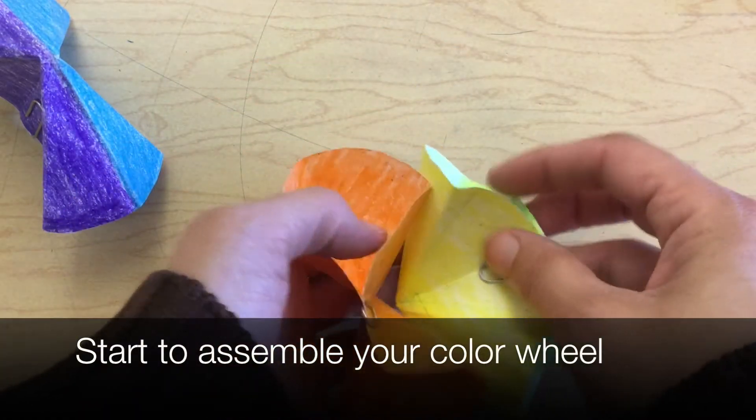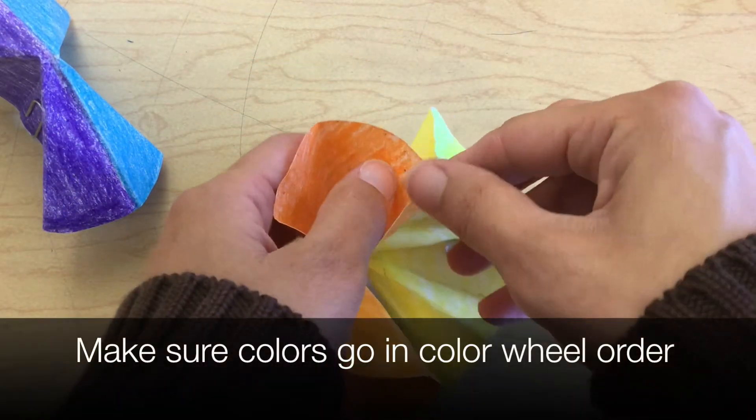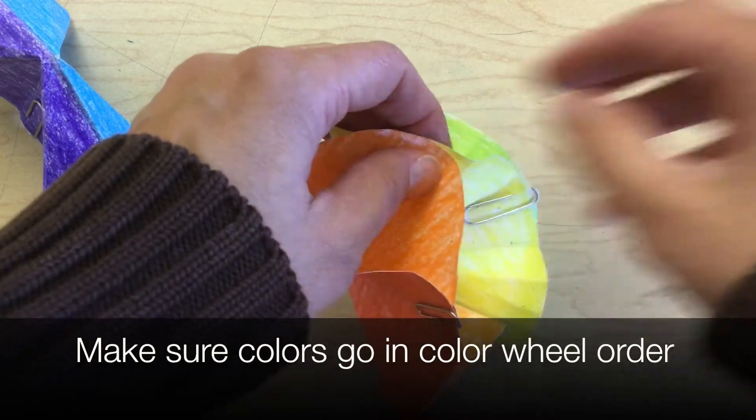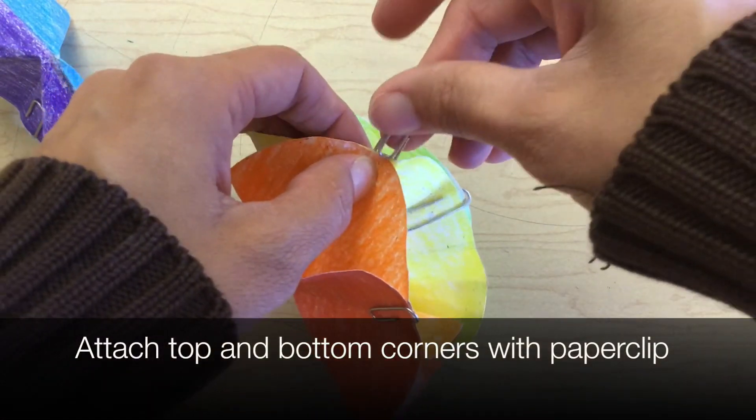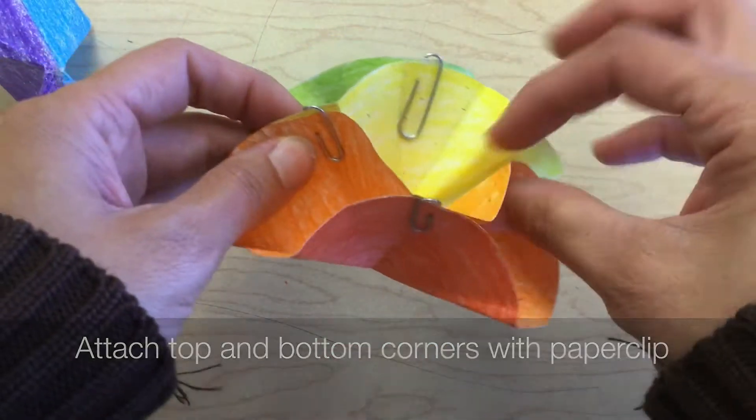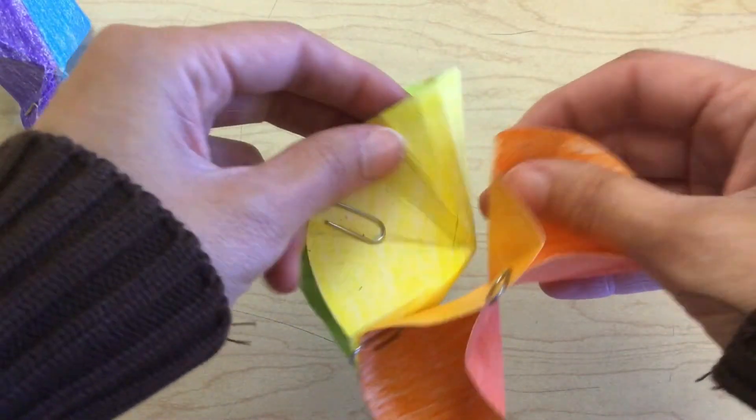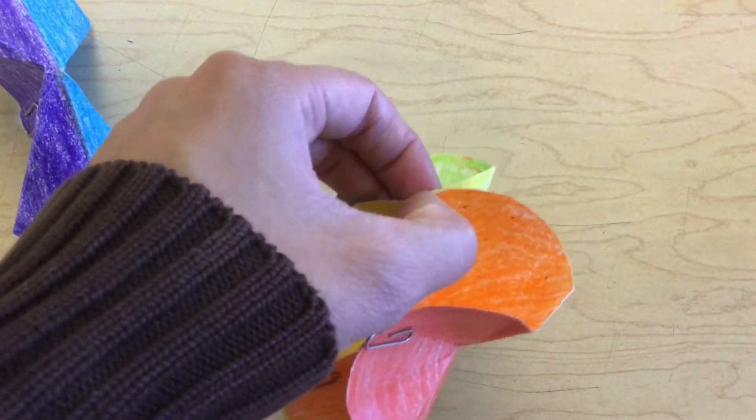When you start to assemble your color wheel, make sure that you put the right colors next to the right colors just like the color wheel. Use paper clips to attach the top and bottom corners so that you can put the color wheel together.